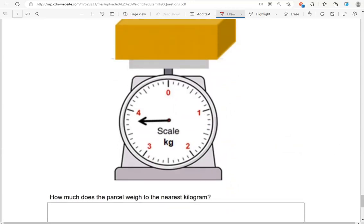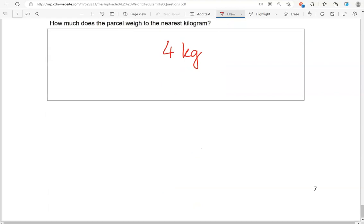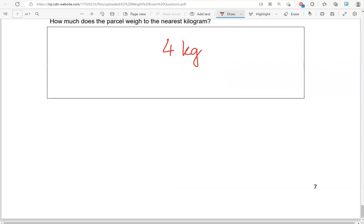How much does the parcel weigh to the nearest kilogram? Kilograms. That's 0, 1, 2, 3 and 4. And the arrow. That is so close to 4. Closer to 4 than it is to 3. So we're going to say 4 kilograms. And that's the end of the questions.